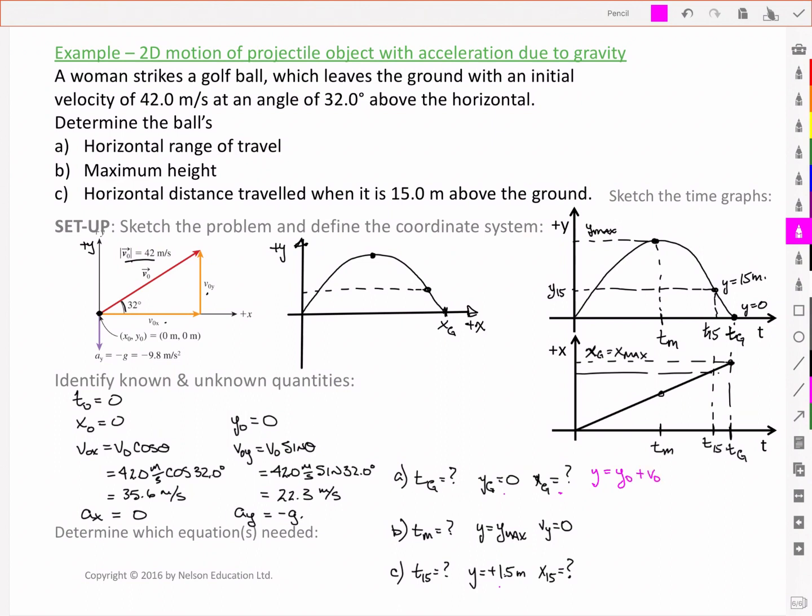So if we look at that equation that describes the y position and the time, we'll notice that we have the acceleration due to gravity. We have the initial velocity. We know that y0 is equal to 0. And we're looking in the case here where y is equal to 0. So that should give us the information we need about time so that we can go on and solve for xg.